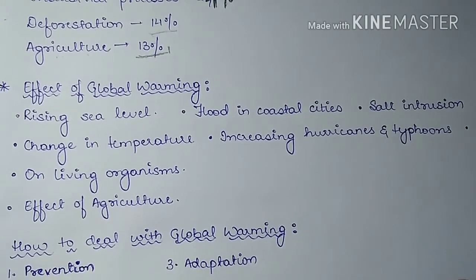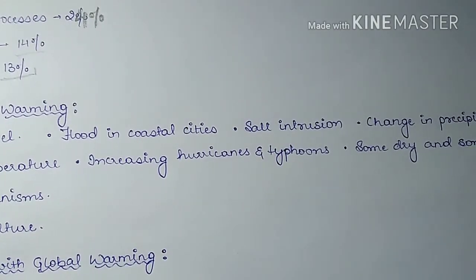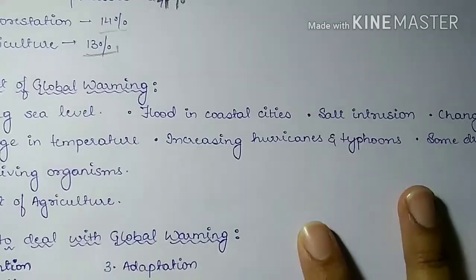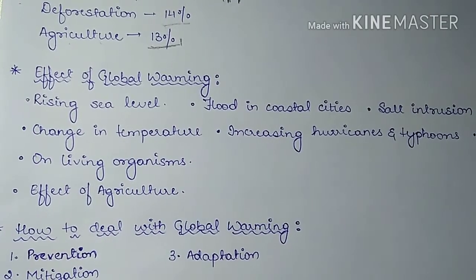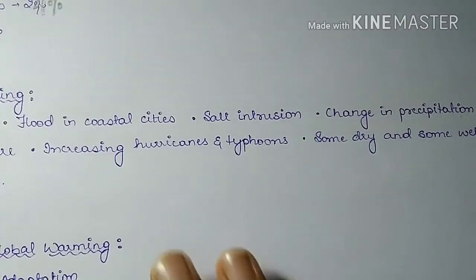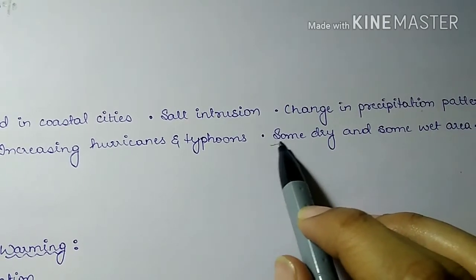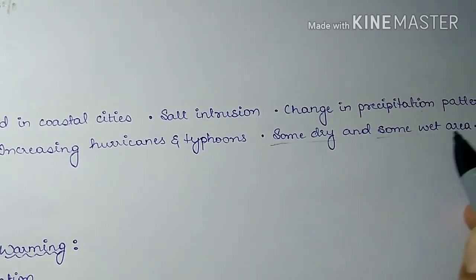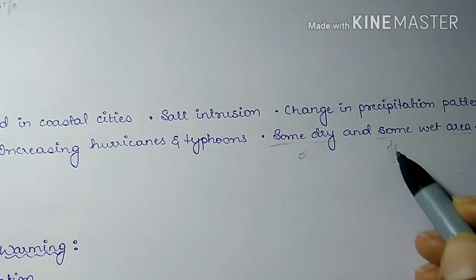The effects of global warming include: rise in sea level, floods in coastal cities, salt intrusion, change in precipitation patterns, change in temperature, increasing hurricanes and typhoons, and great contrasts in climatic conditions where some areas become very dry and others very wet, with some experiencing drought and others floods.